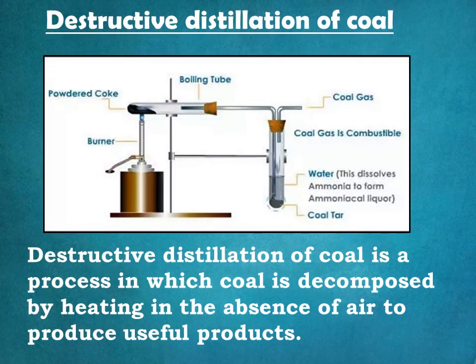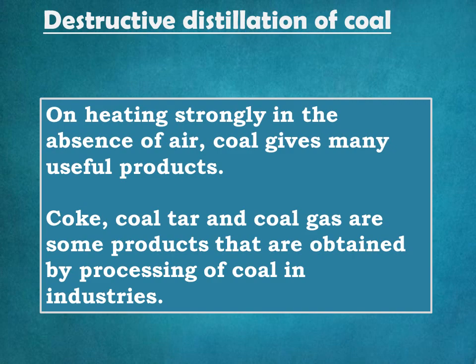Destructive distillation of coal is a process in which coal is decomposed by heating in the absence of air to produce useful products. The image given here shows the laboratorial setup for destructive distillation of coal. On heating strongly in the absence of air, coal gives many useful products.